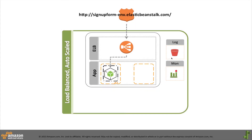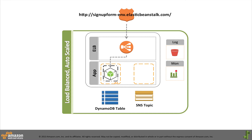Let's talk about where the table and topic come from first. If you do nothing else, an Elastic Beanstalk environment looks like this — it's automatically load balanced and the server capacity automatically scales. It can also store log files for you in S3 and provides a monitoring and metrics dashboard.